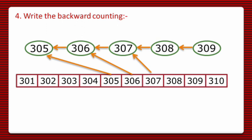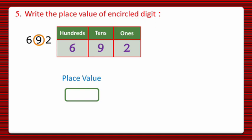Now let's move to question number 5. In question number 5, write the place value of encircled digit. And the value is 692, in which we have to find out the place value of 9.